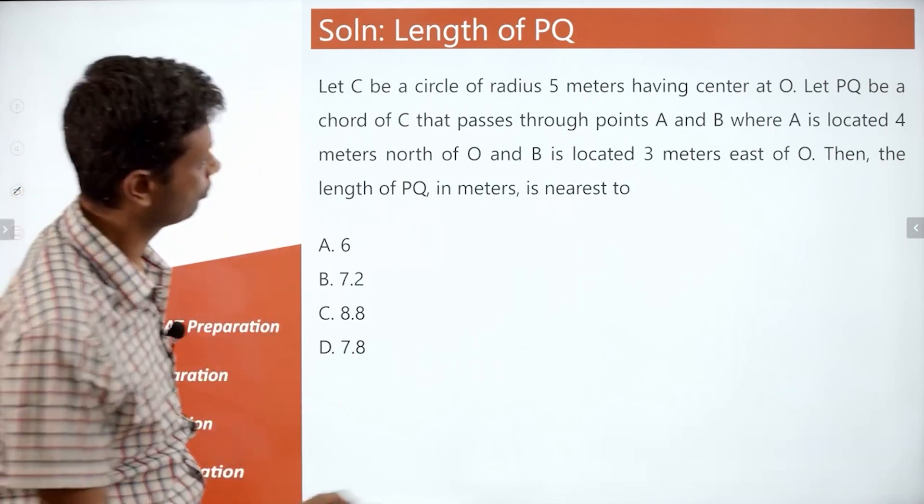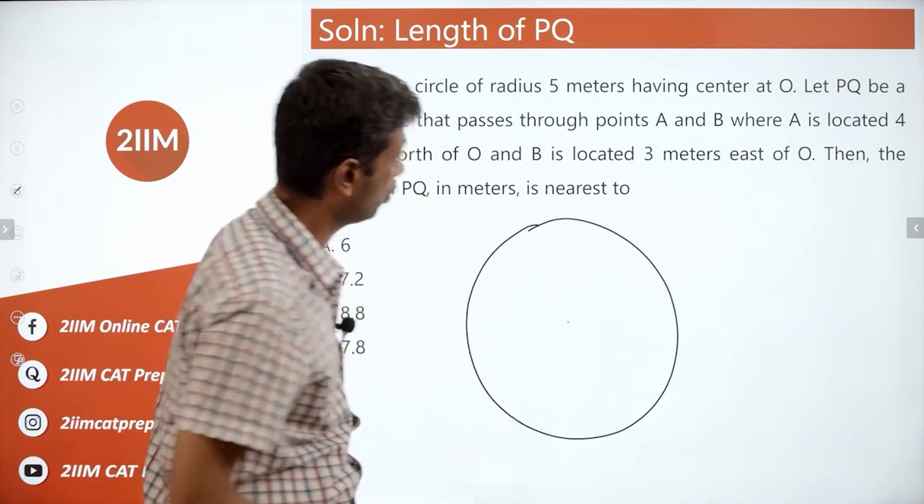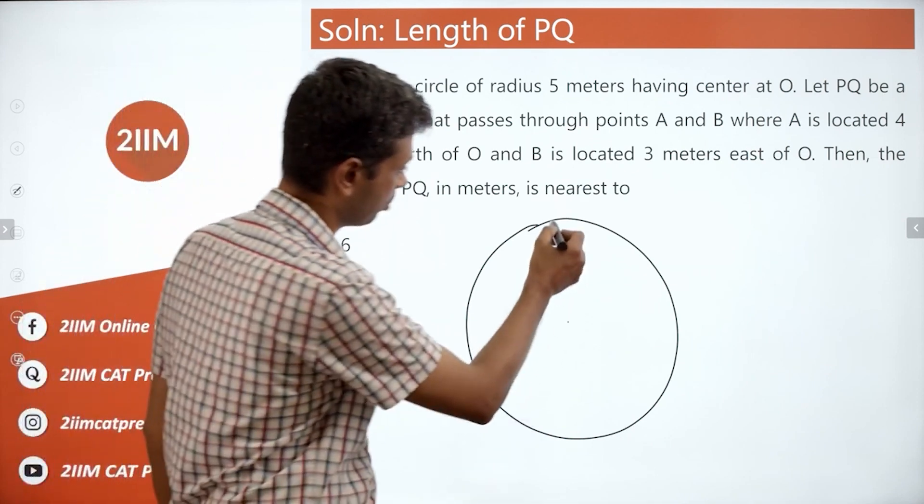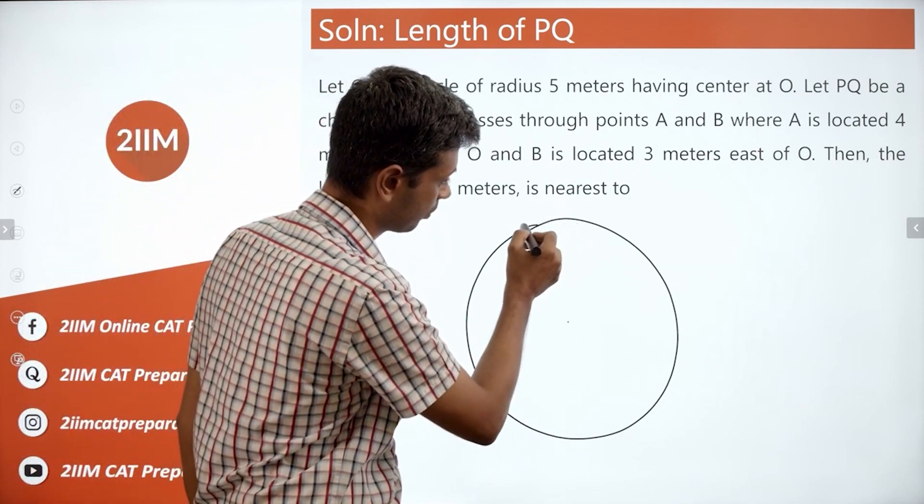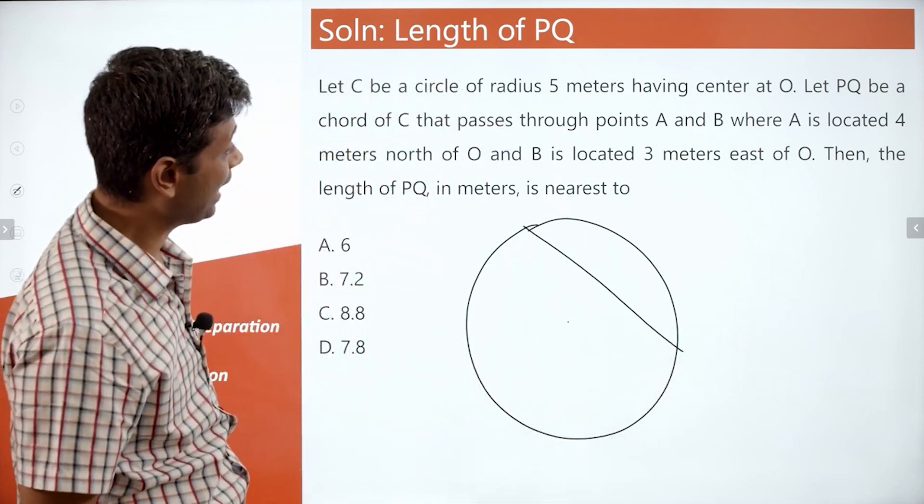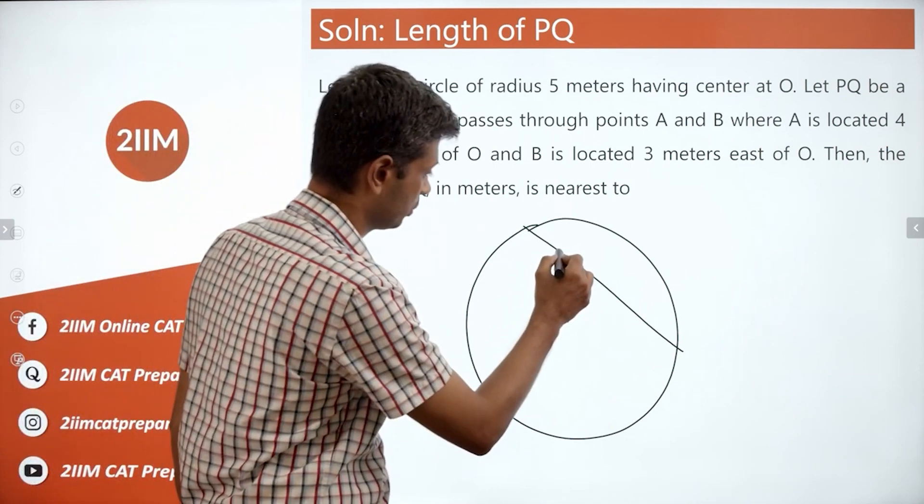Look at this one. Draw the circle. Center O. PQ is a chord of C. So let us draw PQ. Passes through points A and B, where A is located 4 meters north of O.